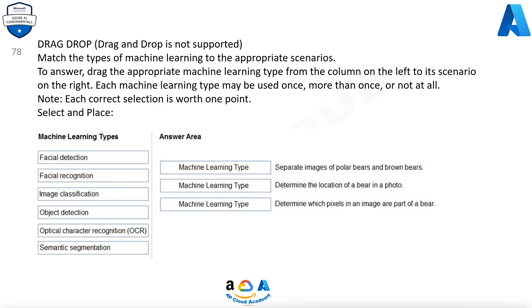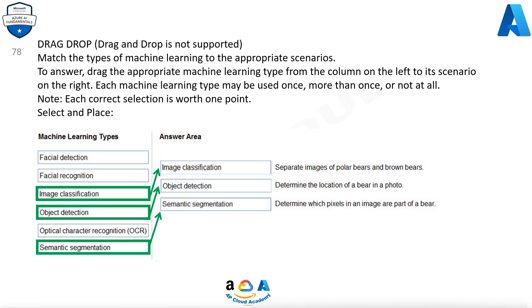Question 78. Match the types of machine learning to the appropriate scenarios. Each machine learning type may be used once, more than once, or not at all. Machine learning types: Facial detection, Facial recognition, Image classification, Object detection, Optical character recognition, Semantic segmentation. Scenarios: Separate images of polar bears and brown bears — Image classification. Determine the location of a bear in a photo — Object detection. Determine which pixels in an image are part of a bear — Semantic segmentation.